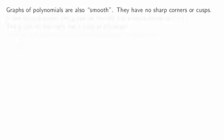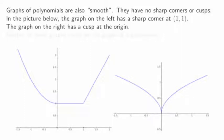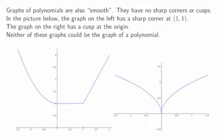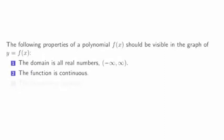Graphs of polynomials are also smooth — they have no sharp corners or cusps. In the picture below, the graph on the left has a sharp corner at the point (1, 1), and the graph on the right has a cusp at the origin. Neither of these graphs could be the graph of a polynomial. So the following properties of a polynomial should be visible in the graph: the domain is all real numbers, the function is continuous, and the function is smooth.